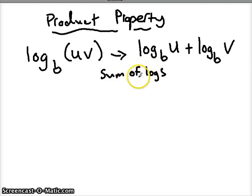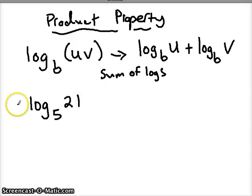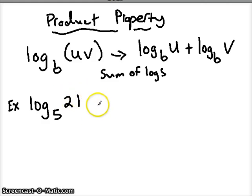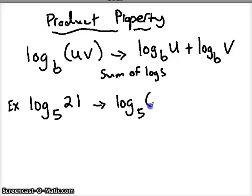Here's an example of what that might look like. If I have log base 5 of 21, how can I rewrite this using my sum of logs, or using my product property? First thing you have to do is create a product out of this number — think what two numbers multiply to give you 21. Hopefully you came up with 7 times 3.